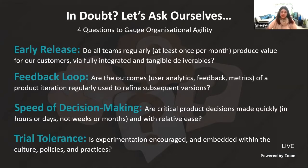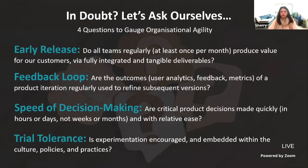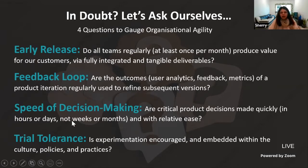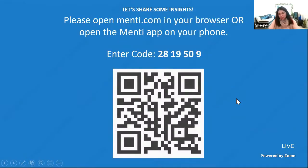In that same spirit, I'd like you to think about your own organization and ask yourself these questions: Are we releasing and integrating early, bringing tangible deliverables to customers at least once a month? Are we completing the full feedback loop, measuring feature performance to refine future versions? Are we making decisions faster? Do we have a culture of experimentation? I'd like you all to open Mentee in your browser — go to mentee.com or use the app — and enter the code or QR code shown. Let's see where we are collectively on these parameters.